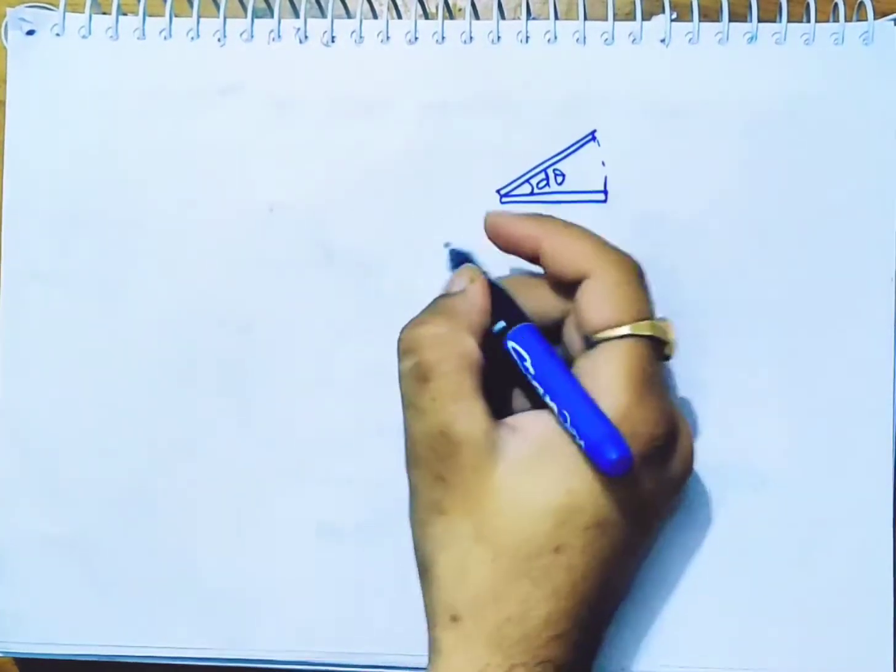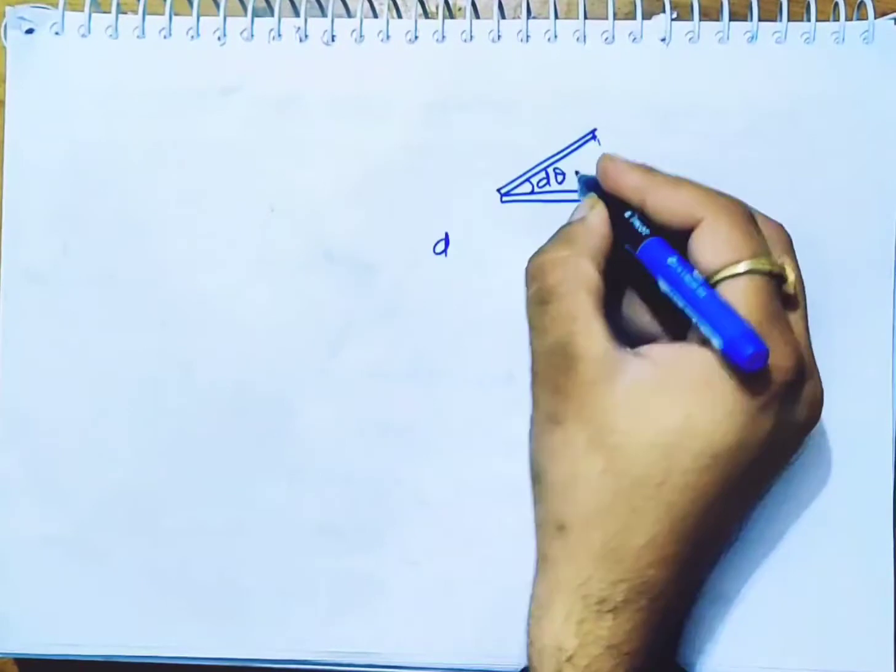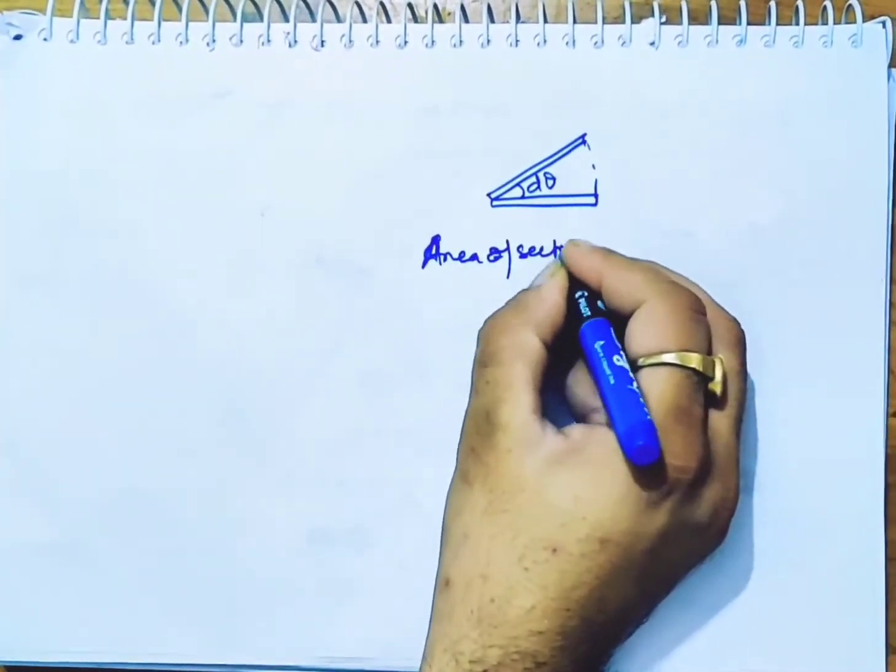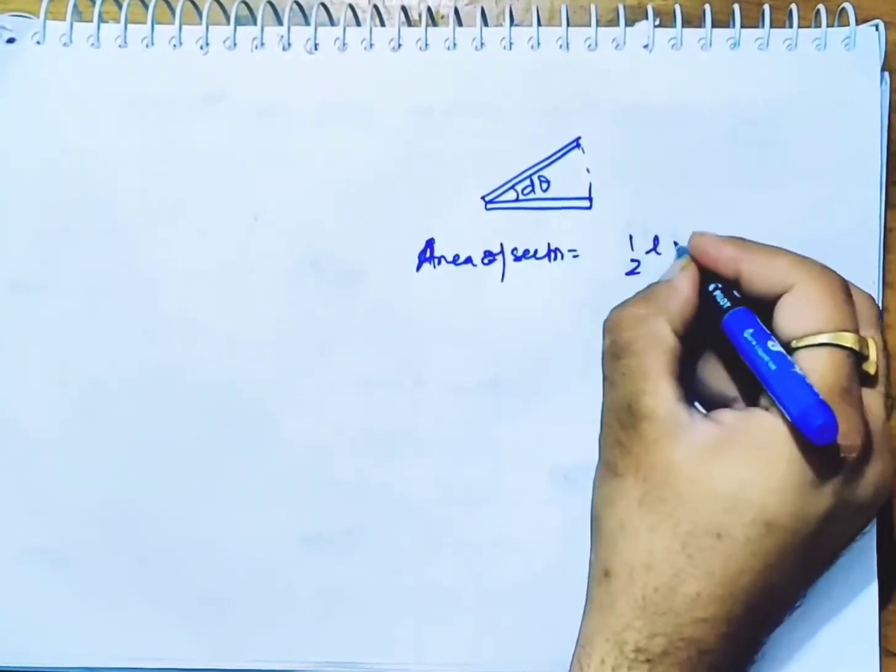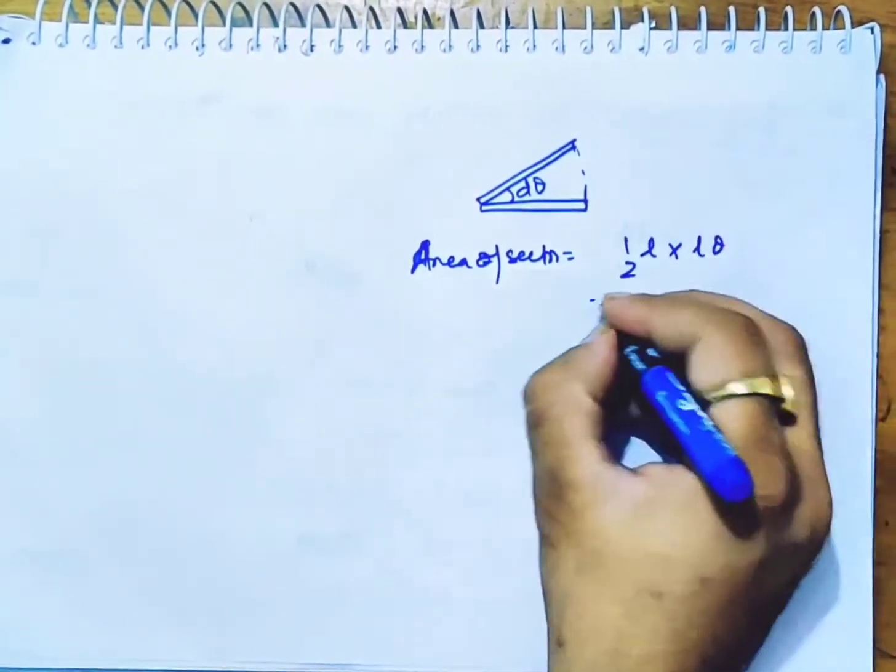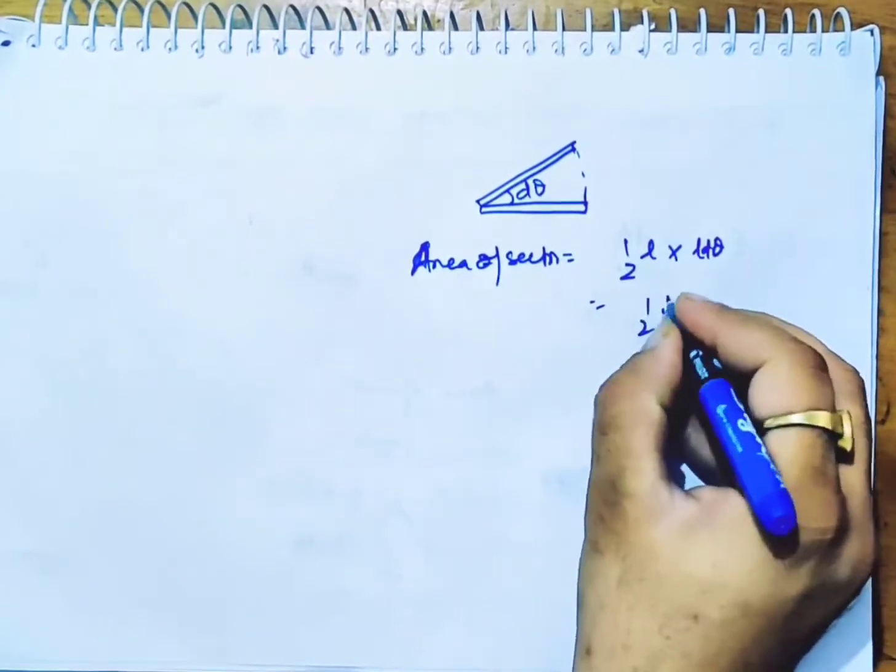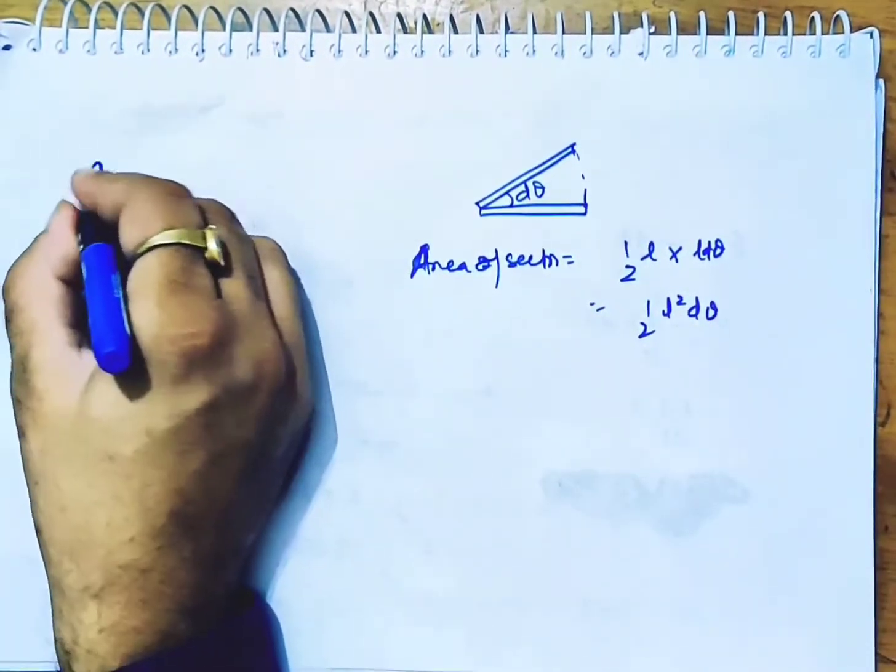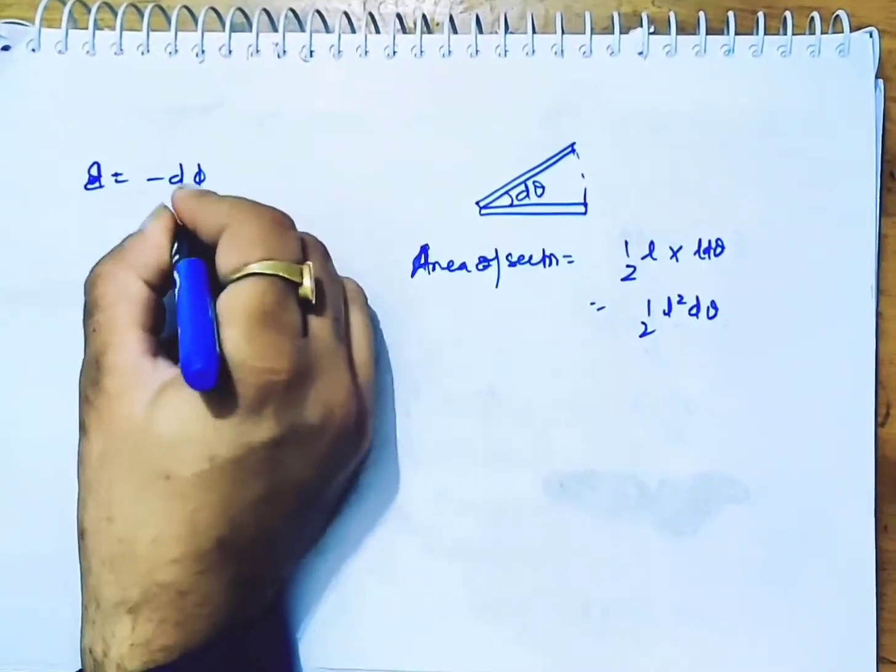Now we know that small area, area of sector, half base into height is L theta - we got dA = 1 by 2 L squared d theta. As we know, EMF equals minus d phi by dt.